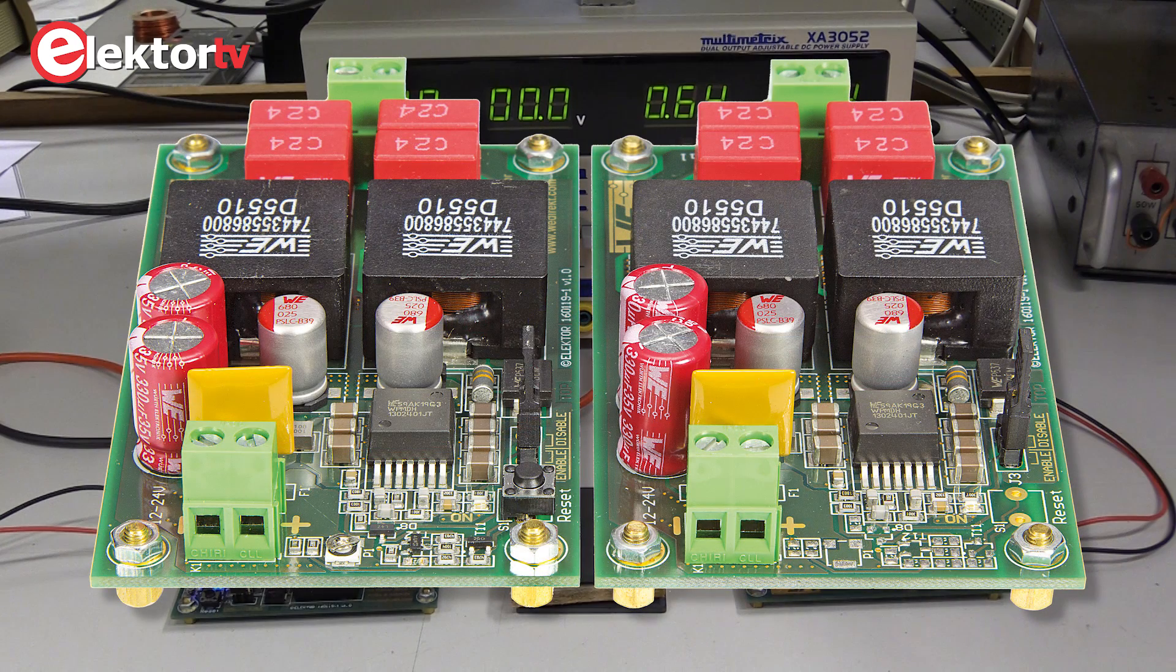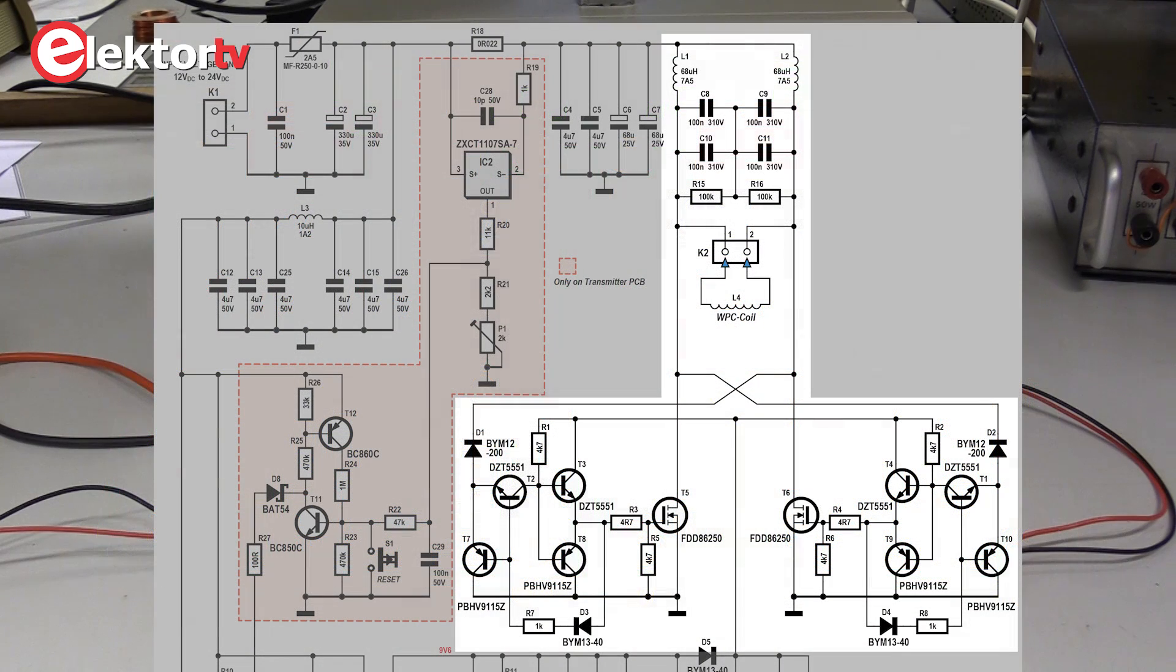Two identical converters and PCBs are used for transmitter and receiver. The main converter is designed for 50 watts and needs a power supply voltage of 12 to 24 volts. The converter of the receiver PCB works as a synchronous rectifier.